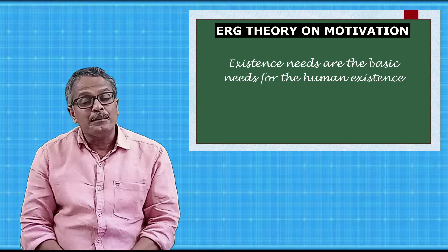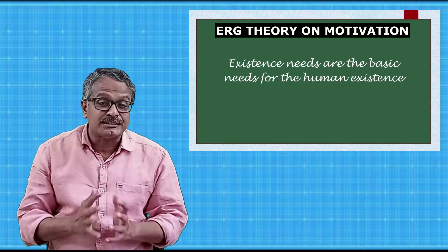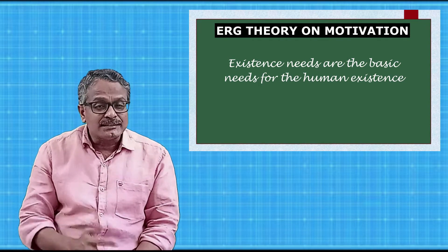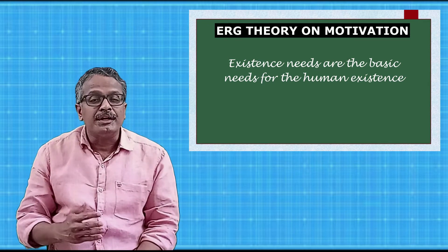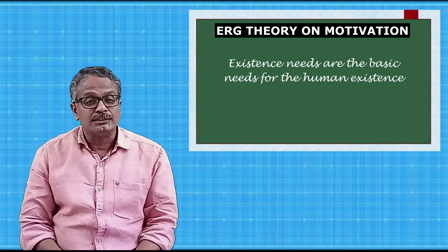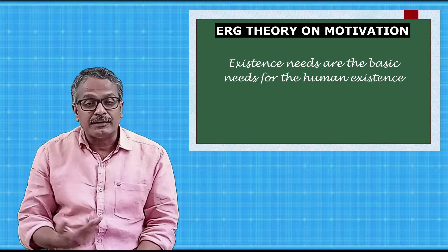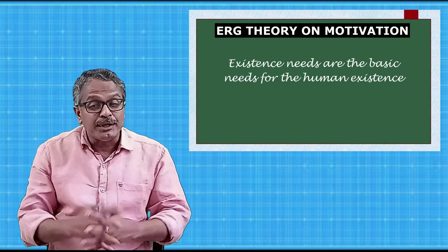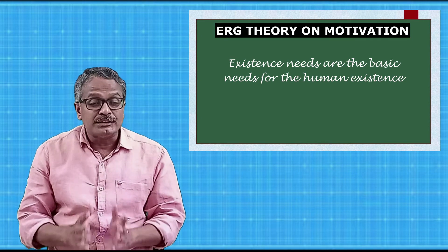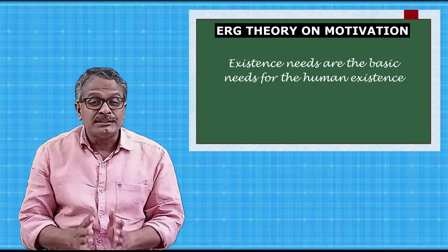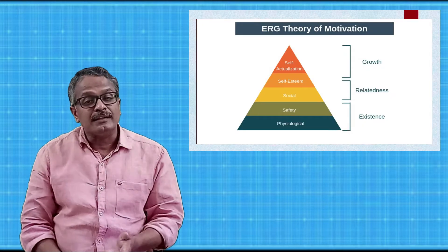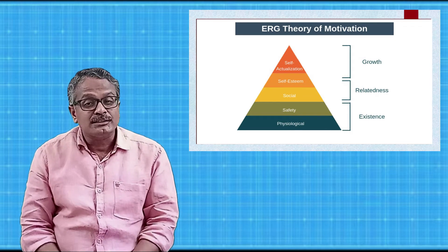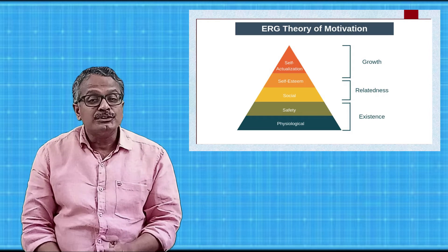Existence needs are the basic needs for human existence. These include the need for necessities. In order to exist in the world, human beings need some necessary items such as food, water, air, shelter, etc. These essentials are necessary for the existence of human beings on earth. Therefore, the needs for these essential items are called existence needs. In Maslow's need hierarchy theory, basic needs such as food, water, and air have been included under physiological needs.